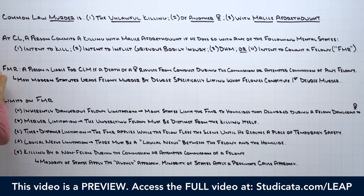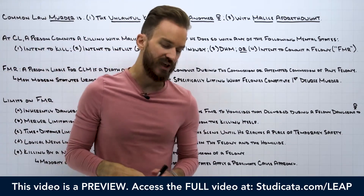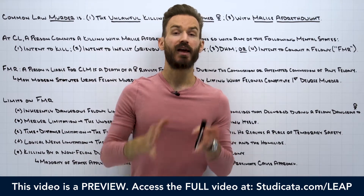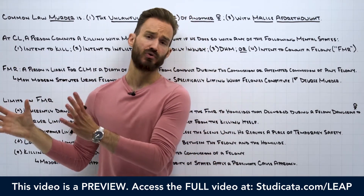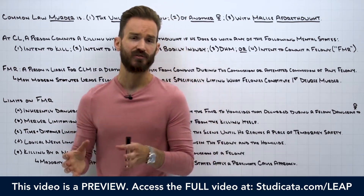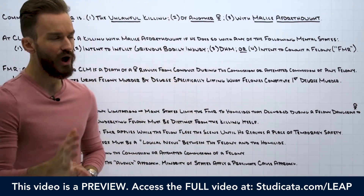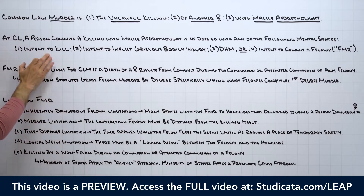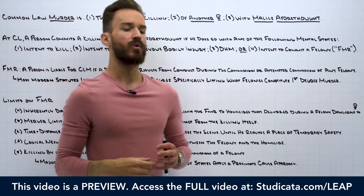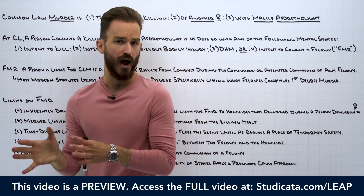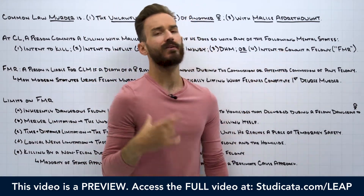What makes the felony murder rule interesting is that we can have a defendant liable for murder — in some states, first-degree murder, a very serious offense — even if that person had no intention to kill somebody or inflict any type of bodily harm. The only intent requirement is that they intended to commit a felony.